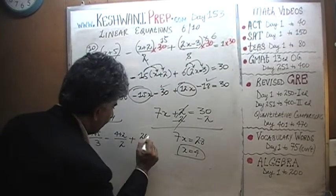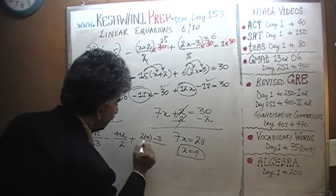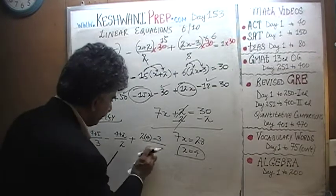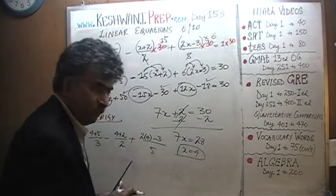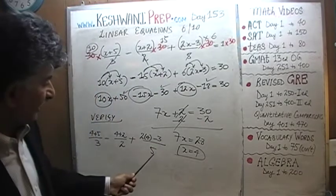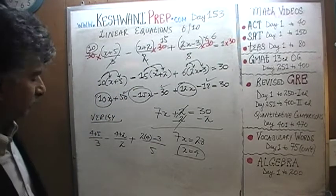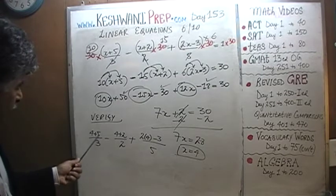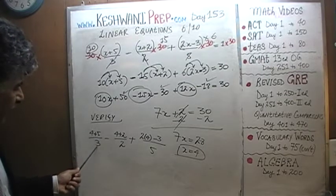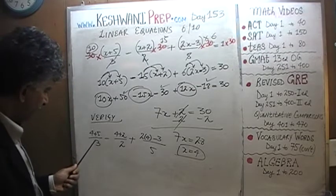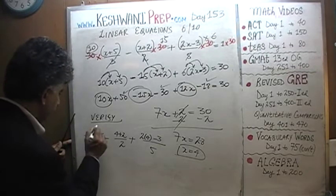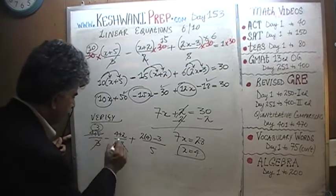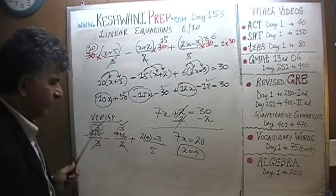Over 5. It's just as well that it's over 5. 4 plus 5 is 9, 9 divided by 3 is 3. 4 plus 2 is 6, 6 divided by 2 is 3. So this 3 is going to cancel out that 3.